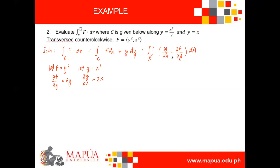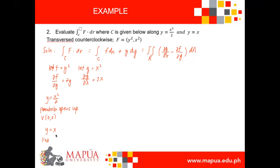After knowing our partial derivatives, let us find the limits for the region. We have the given curves y equals x squared over 2 and y equals x. Let us sketch these two. The first one, y equals x squared over 2, is a parabola which opens upward with vertex at (0, 0). The other curve, y equals x, is a line passing through the origin leaning to the right.